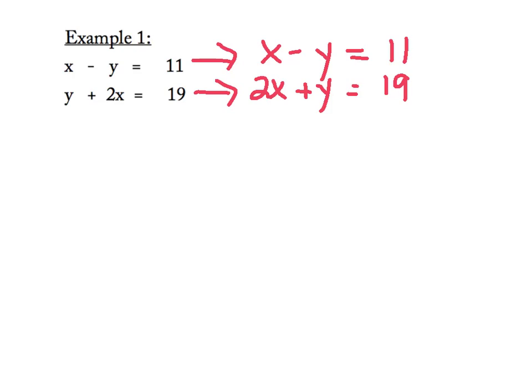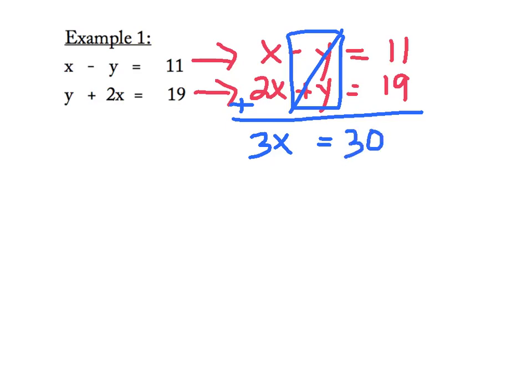Step 2 is to get one column of variables to be opposites. But it looks like our y's are already opposites. So we'll move on to step 3, which is add up our columns. x plus 2x is going to give us 3x. Our y's are opposites, so they cancel each other out. And our constants, when we add 11 plus 19, gives us 30. We'll do a quick inverse operation of divide by 3 on both sides and find out that x equals 10.